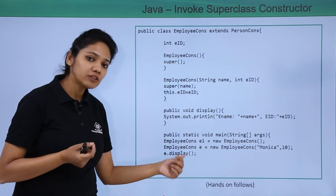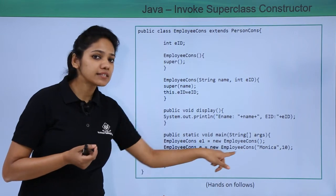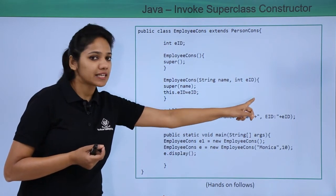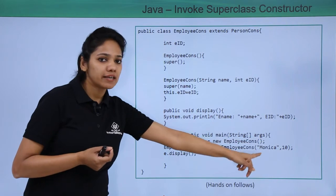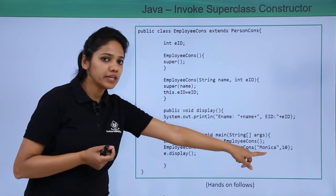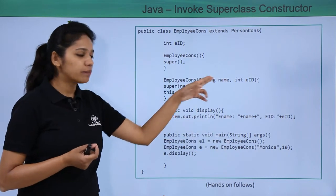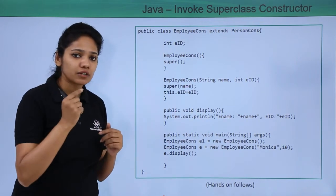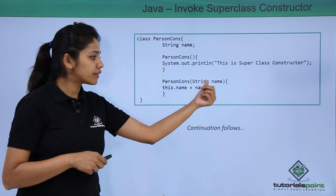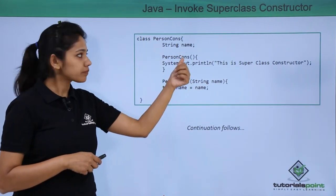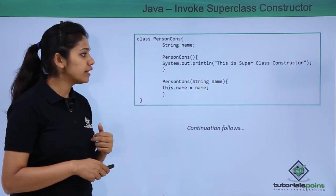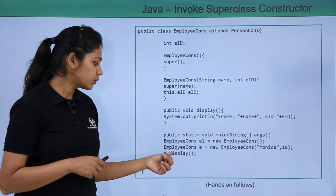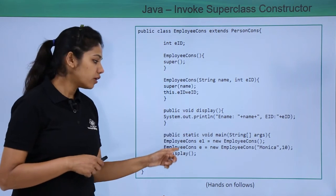Next, another object reference for the child class is created using the parameterized constructor, which takes a String name and an employee ID. The name value is stored via the parent class constructor, and the employee ID is stored in the child class. The display method is then called using the object reference — e.display().